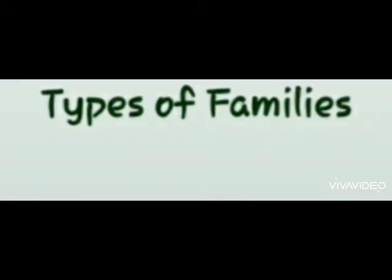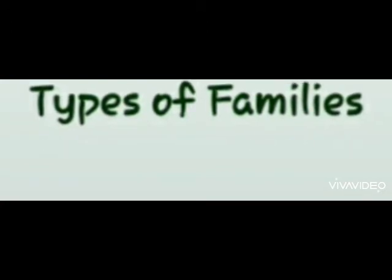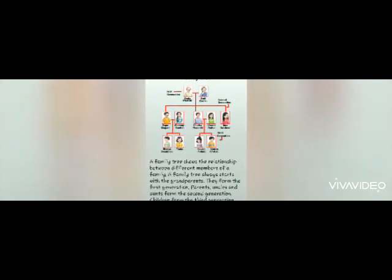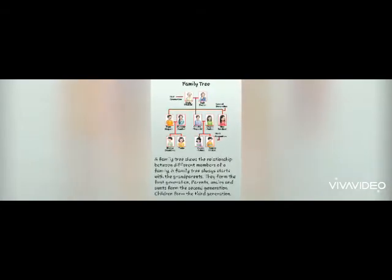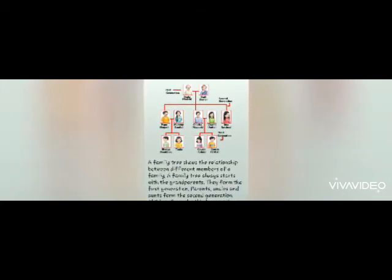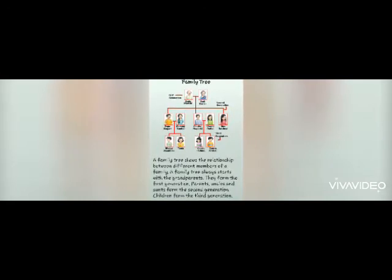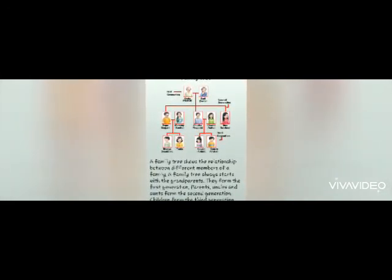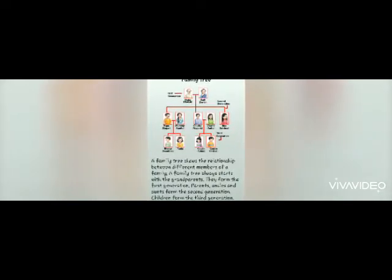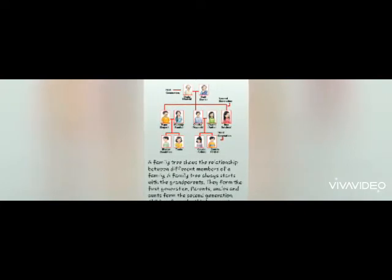We have learned about the types of family. Now, the next topic is 'People in a Family.' This is a family tree. A family tree shows the relationship between different members of a family. A family tree always starts with the grandparents — they form the first generation.